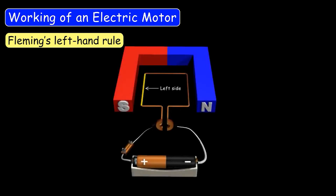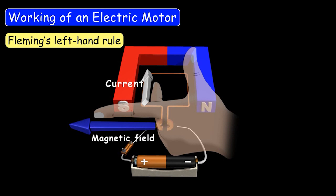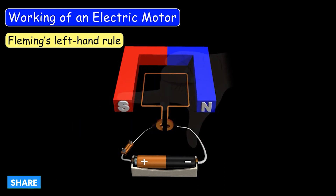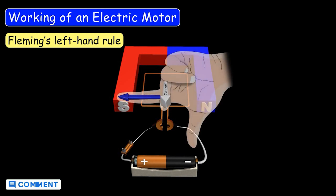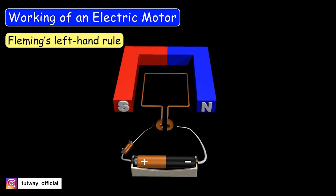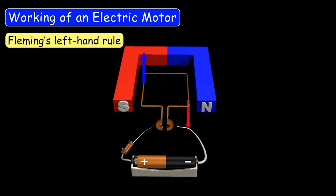On the left side of the coil, given the direction of the current and the direction of the magnetic field, if we apply Fleming's left-hand rule, the mechanical force experienced by the coil on the left side will be upwards. On the right side of the coil, given the direction of the current and magnetic field, the mechanical force will be downwards. So the two sides of the electromagnet experience mechanical force in opposite directions — left side upward, right side downward — causing the electromagnet to continuously rotate.